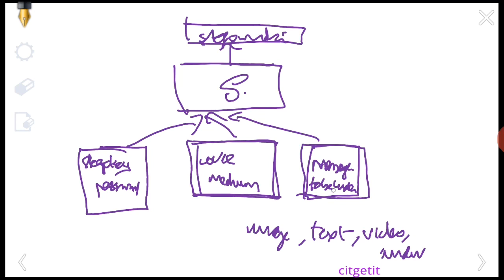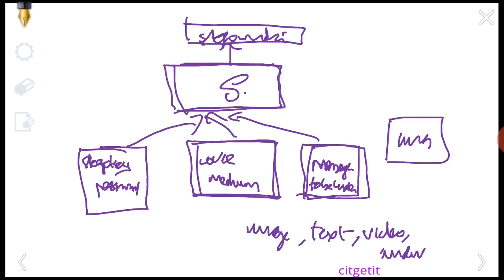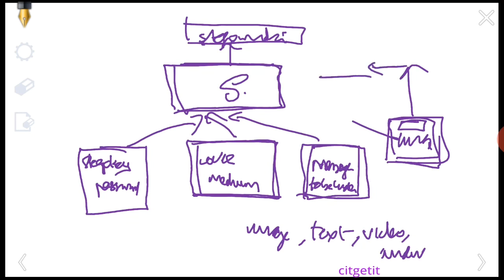There should be a final output using the original image. I click into the text message and enter a password. This is our icon. On the receiver side, we take the image, apply the password, and extract the hidden message. We send the password to the receiver so they can select and decode it.